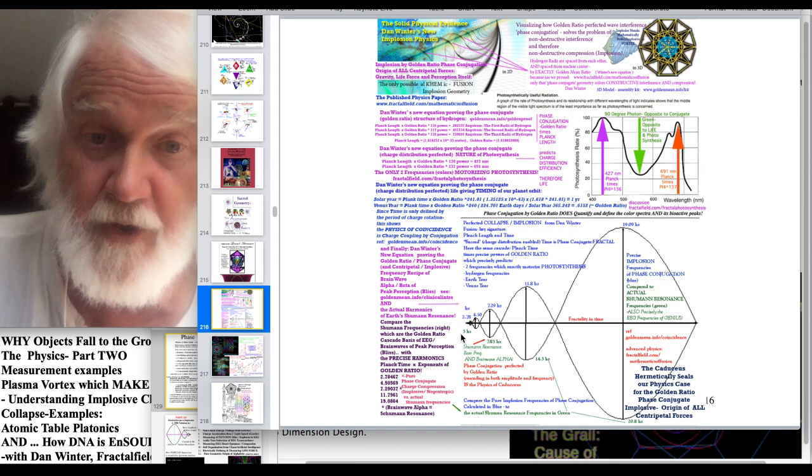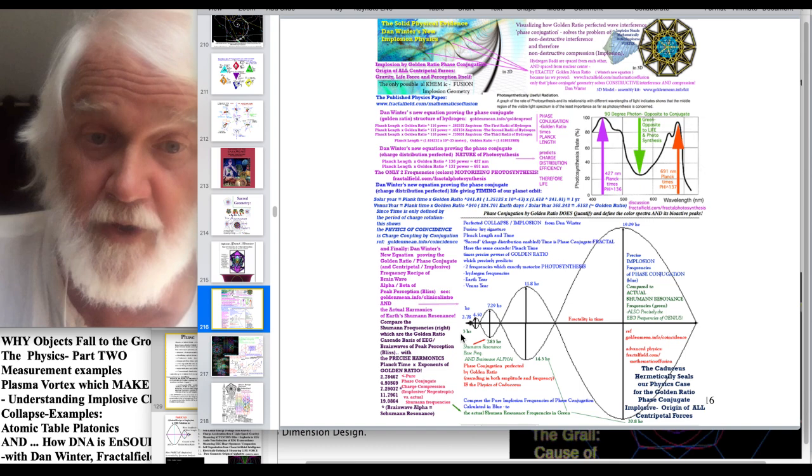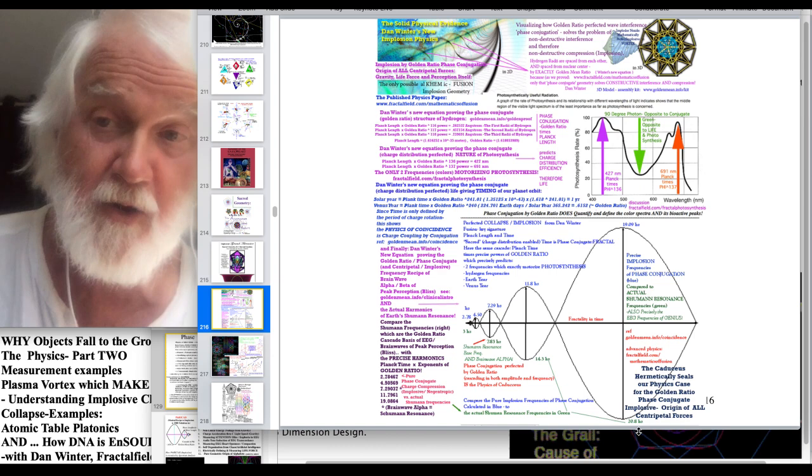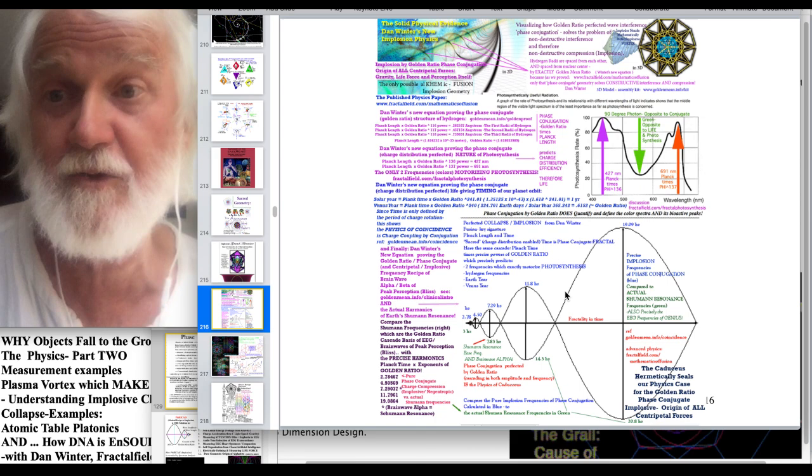And then you look down at the bottom, the actual frequencies of the Schumann harmonics. 3 Hertz, 7.83, 14.3, and 20.8 by measurement. Look how close the Schumann harmonics is to pure phase conjugate charge implosion. Is that a clue to why Lovelock said Gaia is negantropic? That's the point.